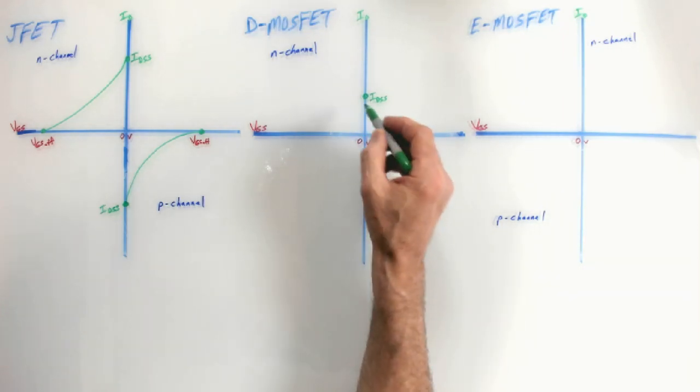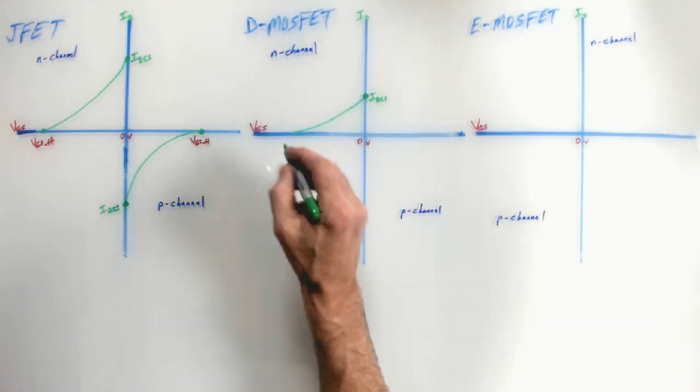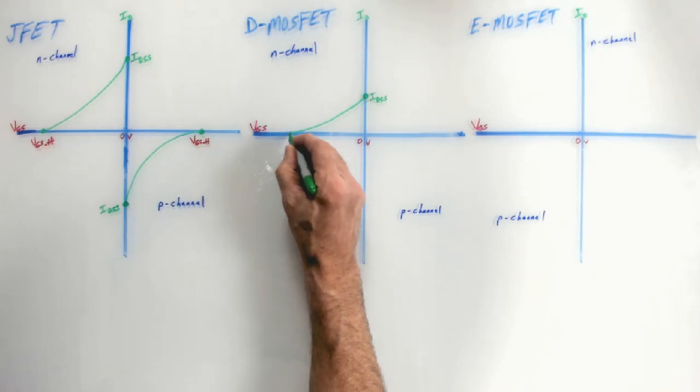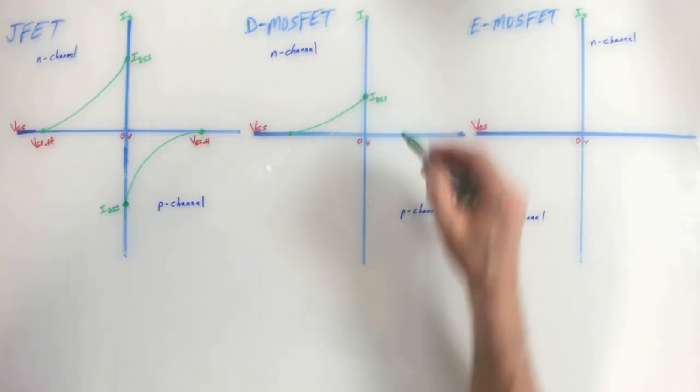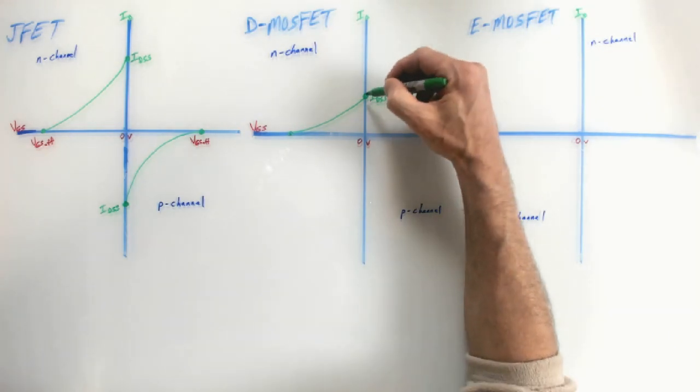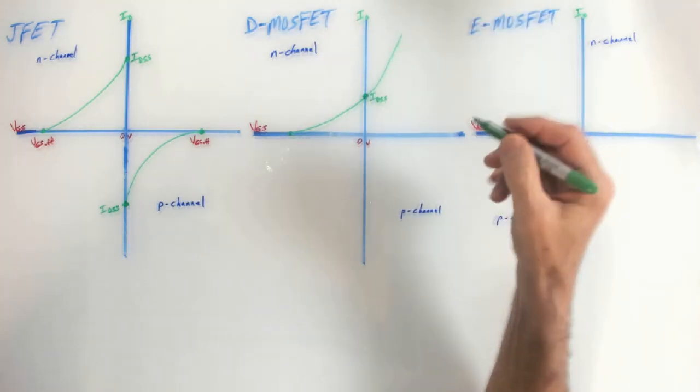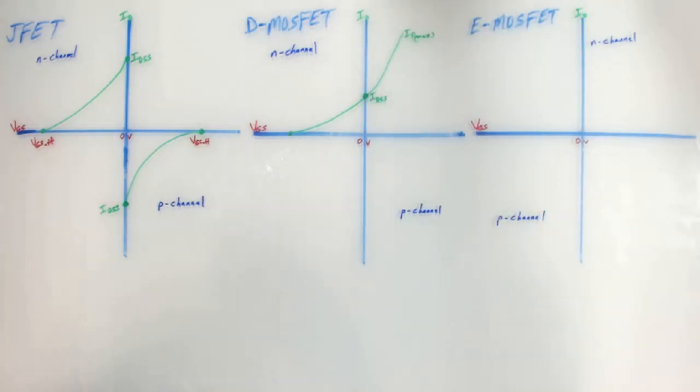Now with a D-MOSFET, you can, for an N-channel, you can make the gate more negative than zero volts and deplete the drain current all the way down to zero. And you can also, though, add positive voltage to the gate and enhance the drain current. So you can increase the drain current to some maximum that the datasheet would tell you you mustn't exceed. So maybe ID max, we could call that. So that's the big difference between a D-MOSFET and a JFET.